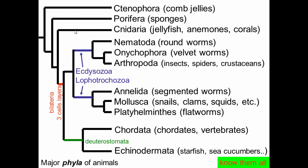These three phyla don't have three cell layers. Bilateria — bilateral symmetry and the evolution of three cell layers — is a synapomorphy for all the remaining phyla. There's a division between protostomes and deuterostomes. Protostomes further split into ecdysozoans and lophotrochozoans. Within ecdysozoa, we have nematodes as basal to onychophorans and arthropods. Within lophotrochozoa, we have annelids as basal to mollusks and platyhelminthes. Over in deuterostomes, we have chordates and echinoderms.